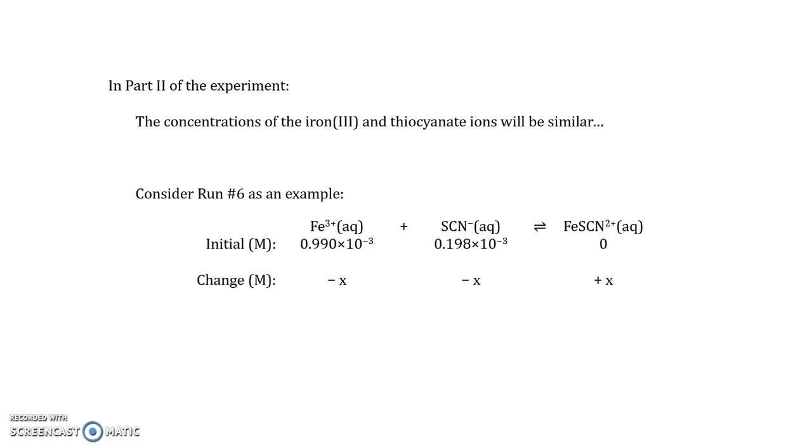Here, as an example, we have run number 6, where the concentrations of the iron(III) and the thiocyanate are very similar, both on the order of millimolar concentrations. Given the change will be far less than complete, we represent it with a variable X. And write from that change an initial and equilibrium line.